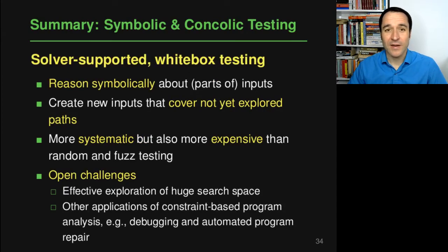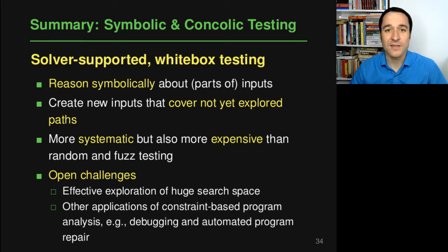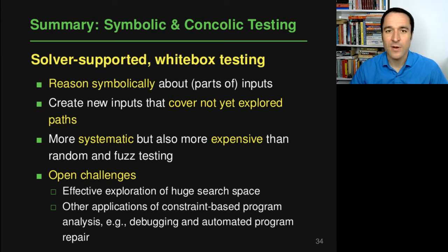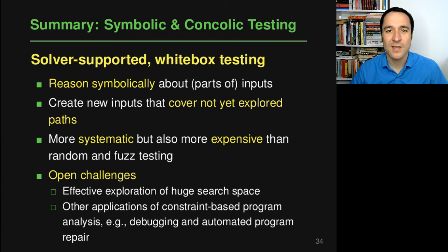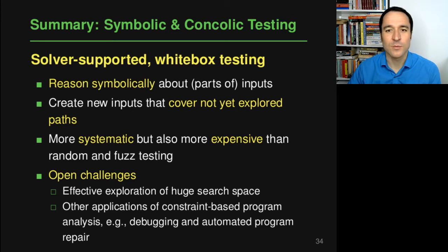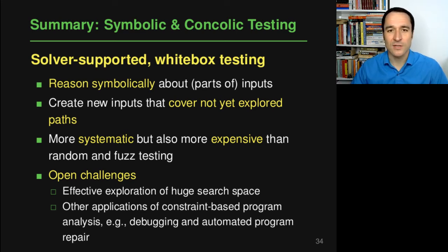Let me finally summarize this lecture on symbolic and concolic execution. We've seen that these two techniques are both solver-supported forms of white-box testing, where white-box means that test generation is supported by a relatively expensive program analysis that looks inside the program and tries to find out what happens with particular inputs. This is done by symbolically reasoning about inputs and creating new inputs that will cover not yet explored paths.